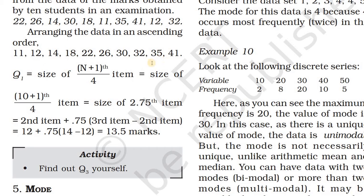Here is another problem. You need to find out the quartiles for the data: 22, 26, 14, 30, 80, 11, 35, 41, 12, 32. First, you need to arrange in ascending order.